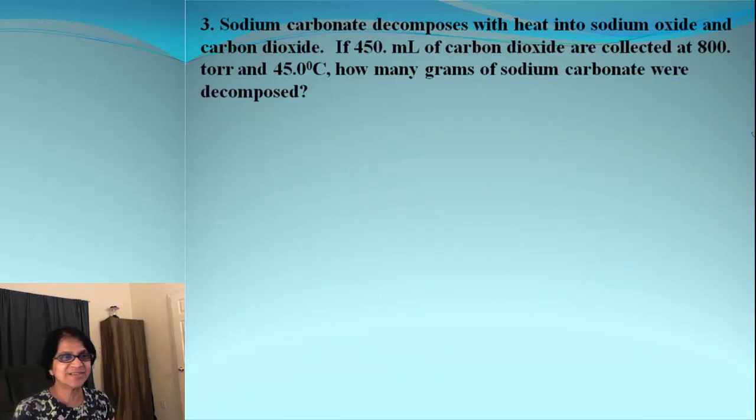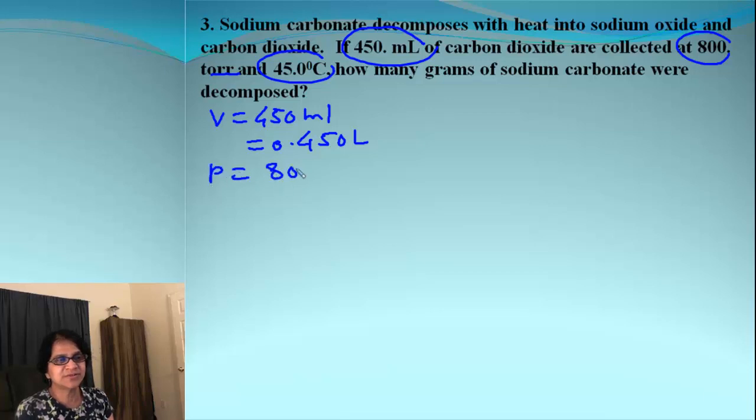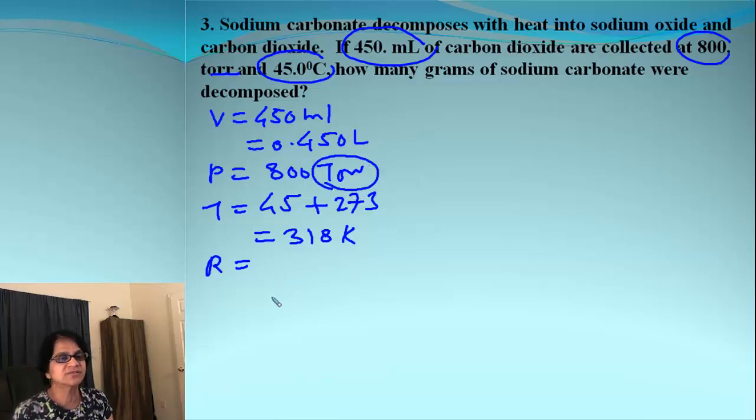Here is one last problem with gas laws and stoichiometry. So let's see what is given to us. That's volume, this is pressure, and that's temperature. Let's list what we have and if we need to convert, convert it immediately. So we have 450 milliliters as volume, and we need to convert that to liters which I believe is 0.450 liters. And then we have pressure, 800 Torr. And temperature is 45 degrees Celsius, so we need to add 273 to make it to Kelvin, which is 318 Kelvin. Now remember, we also need to get R value, and that is based upon the value you need for pressure. So that is Torr, R will be 62.4.